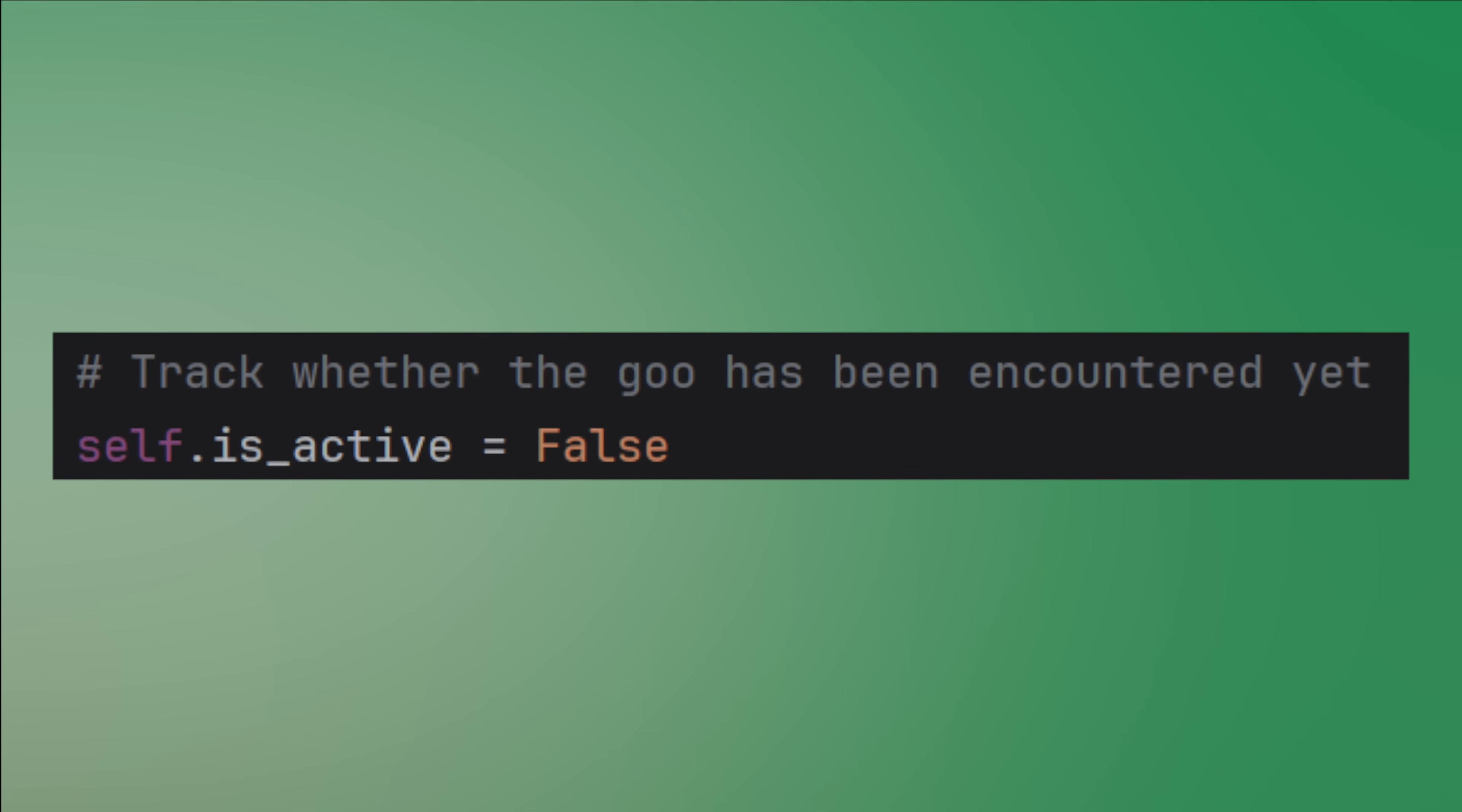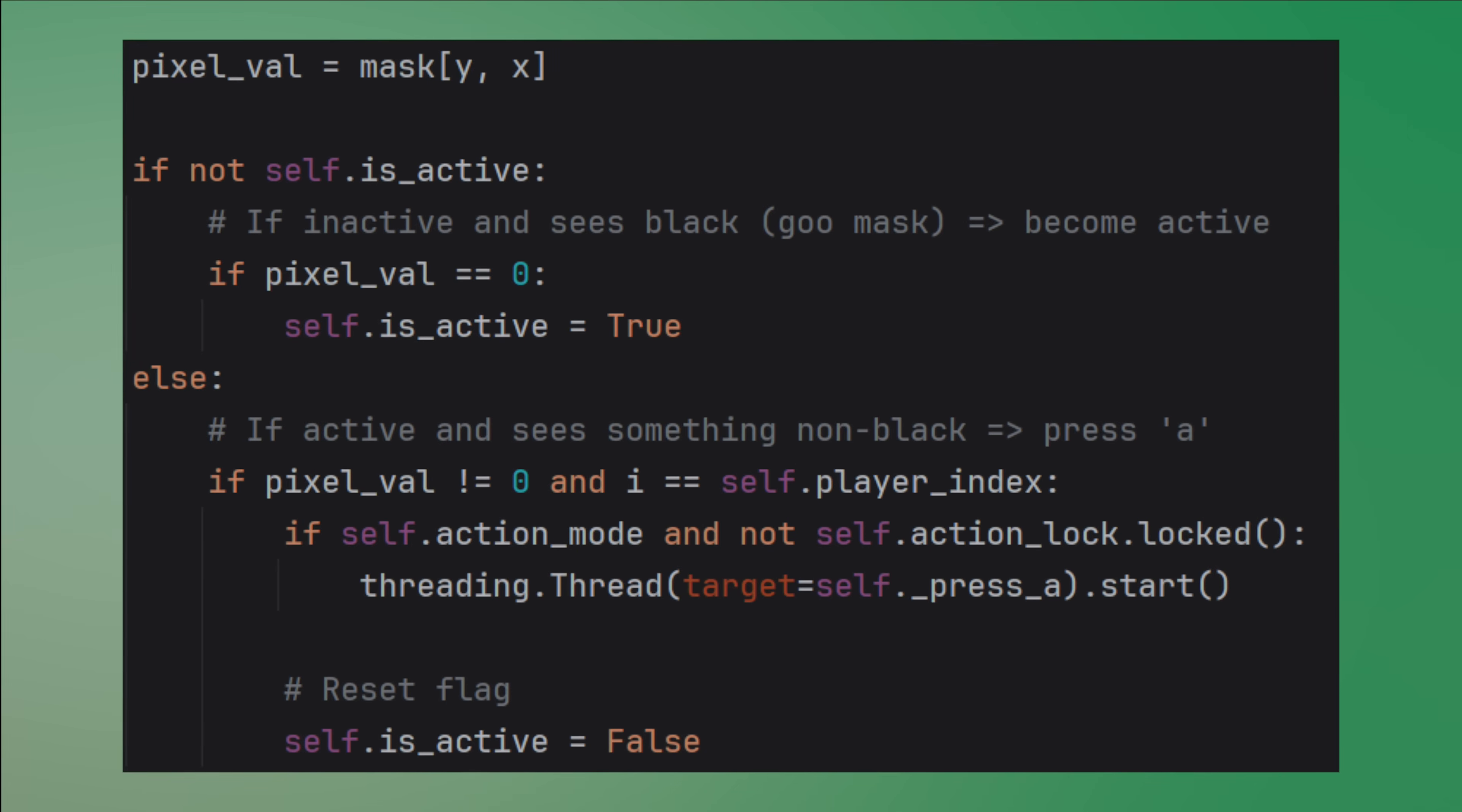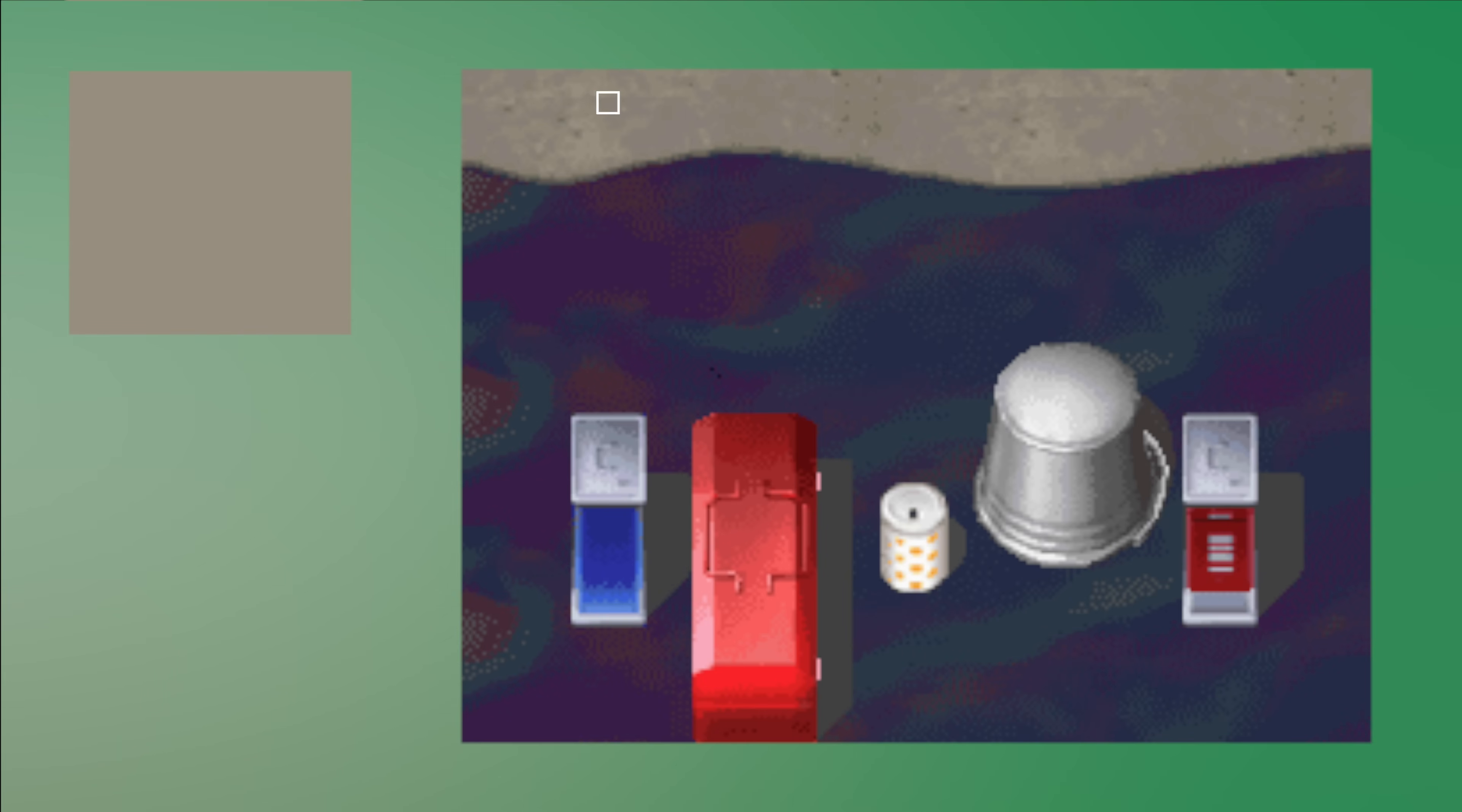Keep track if we have encountered the goo yet. I simply set a flag that tracks whether we have seen any black pixels yet. Only after that point is the bot ready to press A to let go of the rope. All that's left is to figure out from where exactly I should read the color values of the screen. After some tries I found out that 10 pixels from the top of the touch screen in the center of each lane works well.